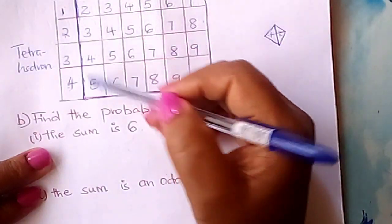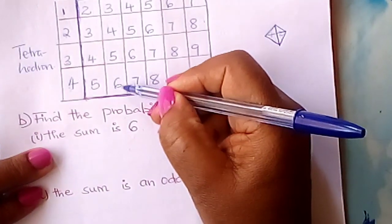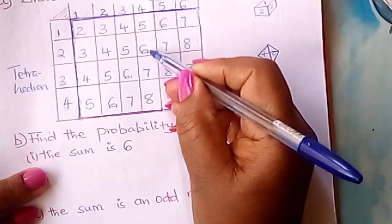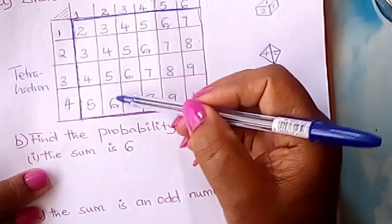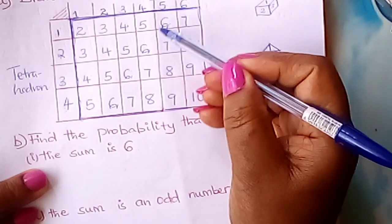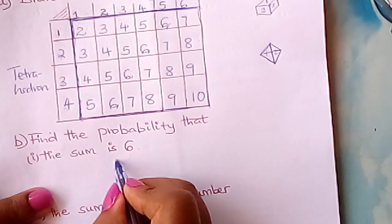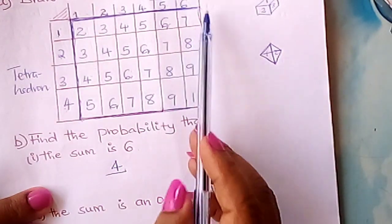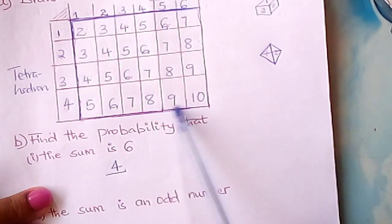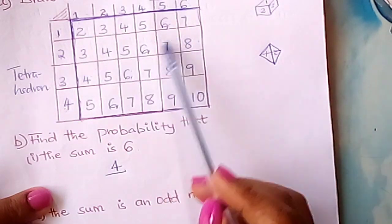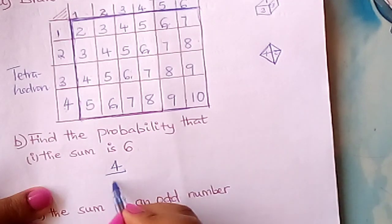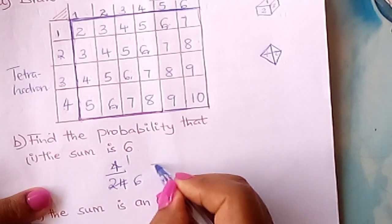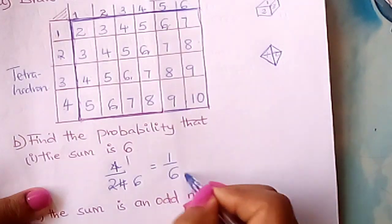You look through the table for all the sixes. We find four sixes in the table. So the probability is four out of twenty-four, which simplifies to one over six.